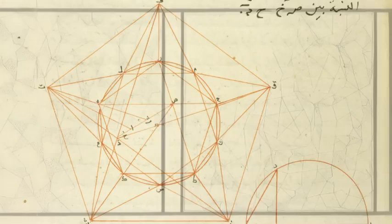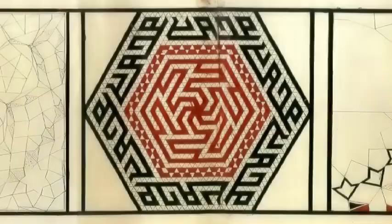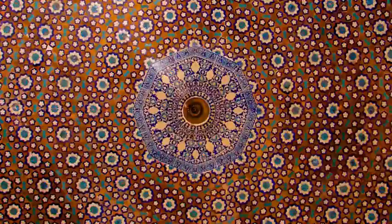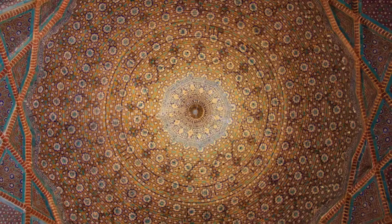Accompanying this was an increasingly sophisticated use of abstraction and complex geometry in Islamic art, from intricate floral motifs adorning carpets and textiles, to patterns of tile work that seemed to repeat infinitely, inspiring wonder and contemplation of eternal order.